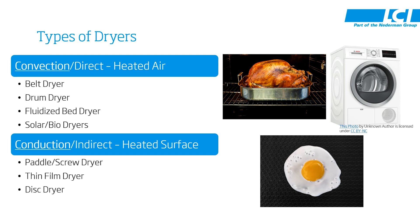An indirect dryer uses a heated surface — here using the example of an egg frying in a pan. In both cases you're using a heat source: in terms of cooking an egg it's a burner underneath a pan, and in terms of an indirect dryer it's a heating medium like thermal oil or steam injecting heat into a jacket. That jacket then transfers the heat into the sludge, just like a frying pan transfers heat into the egg, heats the sludge up, gets it to boiling, and evaporates the water.